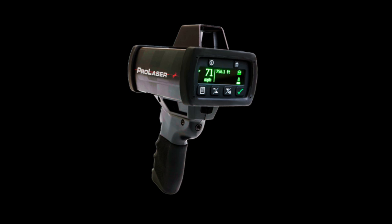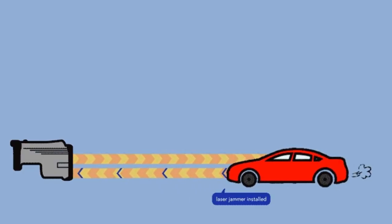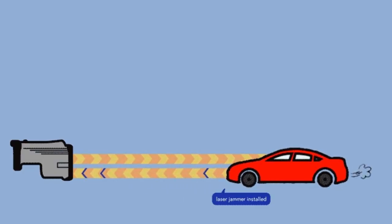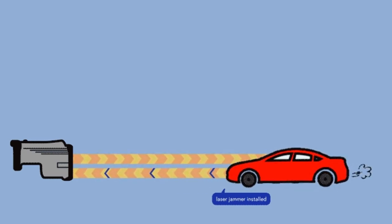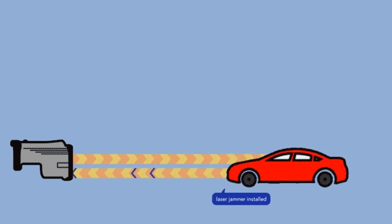Radar guns utilize the principle of the Doppler effect. When a radar beam is directed at a moving object, such as a vehicle, the frequency of the radar waves reflected back to the gun changes based on the speed and direction of the object.